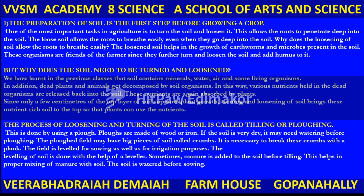Soil contains minerals, water, air and some living organisms. Dead plants and animals get decomposed by soil organisms, and various nutrients held in dead organisms are released back into the soil. These nutrients are again absorbed by plants. Since only a few centimeters of the top layer of soil support plant growth, turning and loosening the soil brings this nutrient-rich soil to the top so that plants can use the nutrients. The process of loosening and turning of the soil is called tilling or plowing.